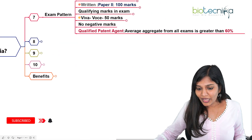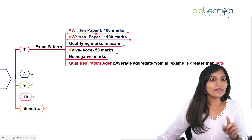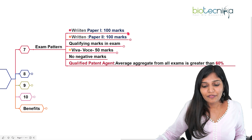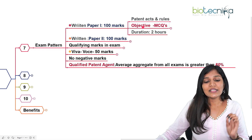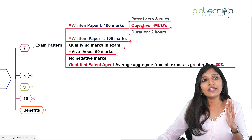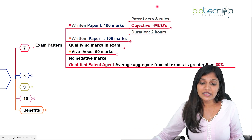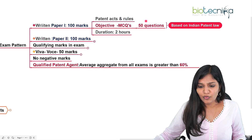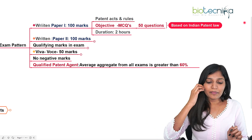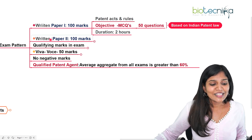Let's talk about the exam pattern in detail. There are two papers — Paper 1 and Paper 2 — each for 100 marks. Paper 1 covers patent acts and rules. The questions are objective MCQ type, with 50 questions based on Indian patent law. You can download the PDF from the IPO website. The duration is two hours, and there is no negative marking.